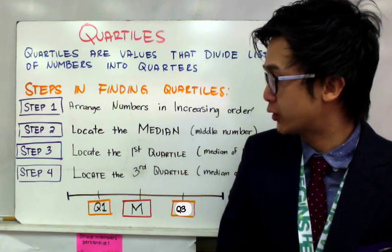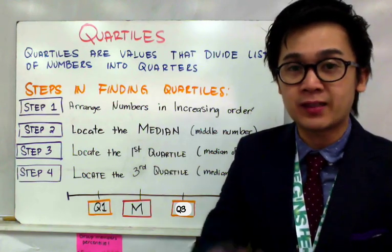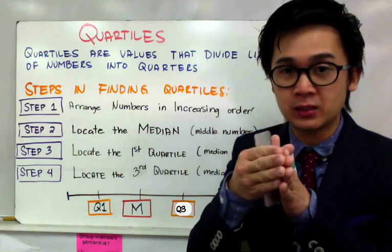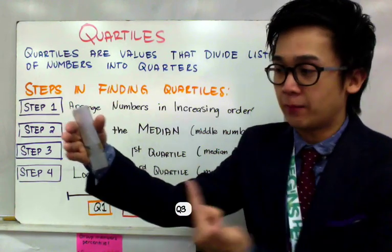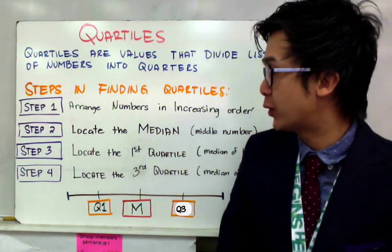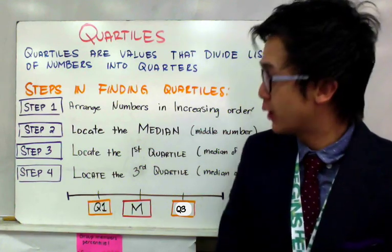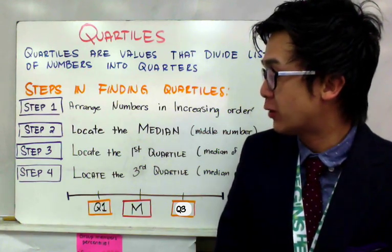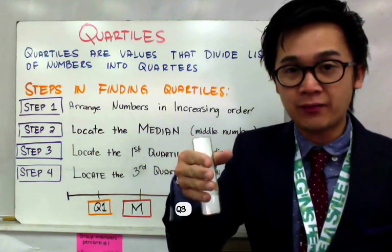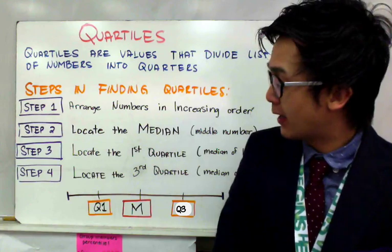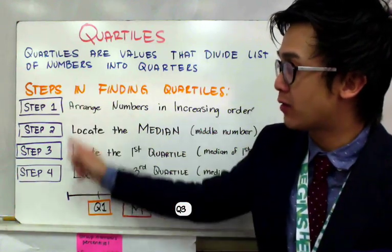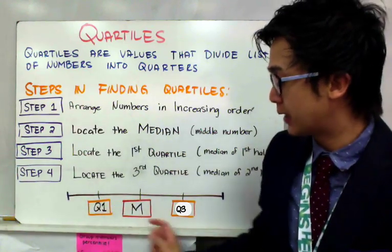Step number three is locating the first quartile. The first quartile is basically the median of your first half. Given your list of numbers arranged from least to greatest, you found your median in the middle. Your first half will give you Q1 — find the middle of that first half. You will also locate the third quartile on the second half of your list; the middle of the second half will be Q3. So you have Q1, your median, and Q3.